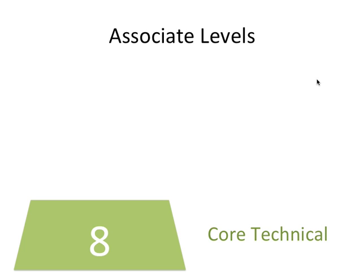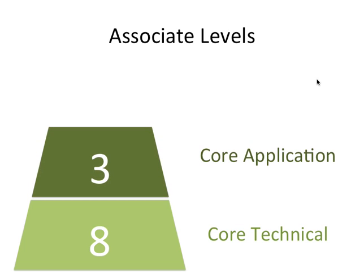Once you get all eight of those exams done, you then move on to what we call the core application exams — the CA exams. These are less mathematical. CA1 is, in my opinion, the most difficult of the 11 exams; it's essentially theory where you have to use actuarial judgment to answer the questions. CA2 is all about creating a model and an audit trail for that model, and CA3 is communications — explaining actuarial techniques in everyday English.